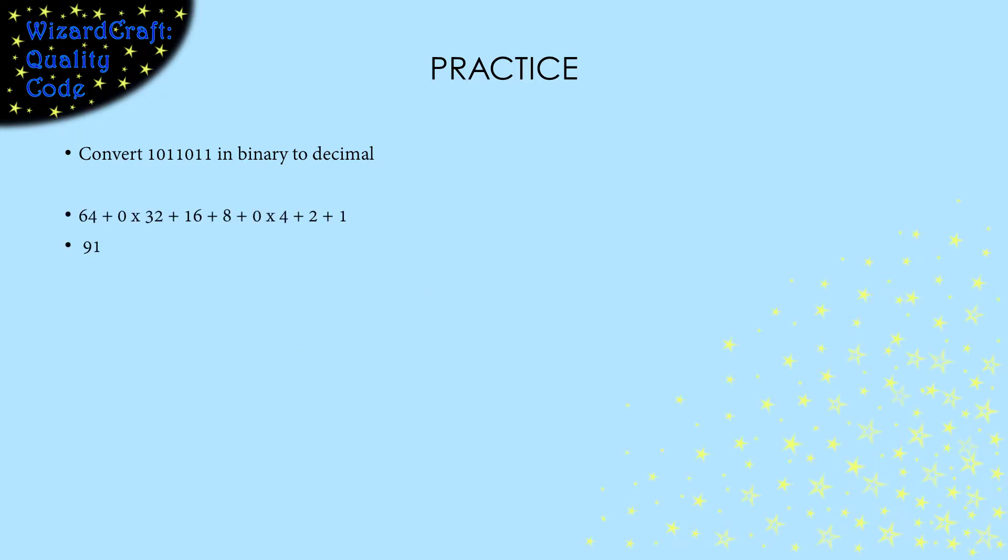Converting anything to decimal requires multiplying the values in each position by the appropriate power of the base. Since this is binary, the base is 2 and the positions are the powers of 2.